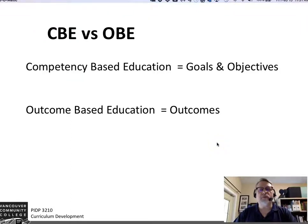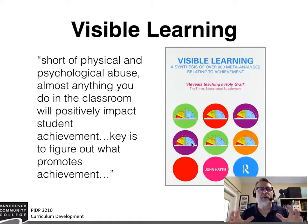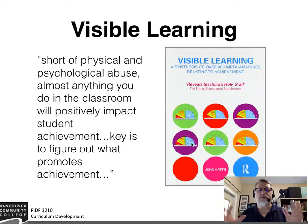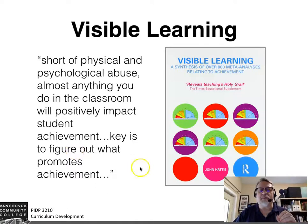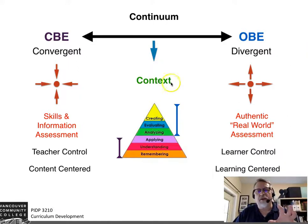Competency-based education has a focus on goals and objectives, while outcomes-based education focuses on outcomes. Neither system is better than the other — each serves a very specific purpose. Research shows that as long as you're not doing anything to harm your learner, any system or form of education is going to contribute to success. It's best to understand the difference between the two from the perspective of a continuum and the context of learning.